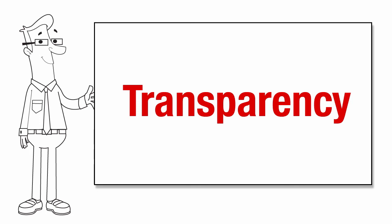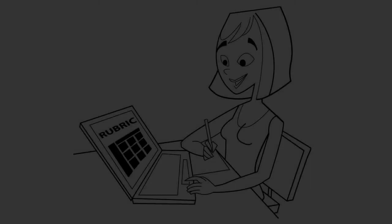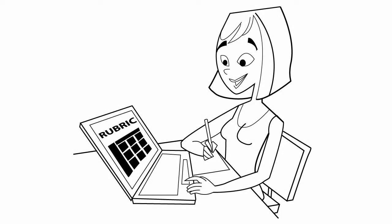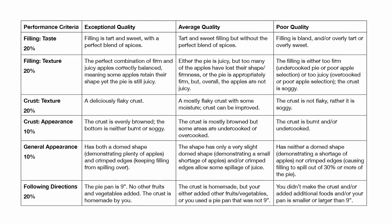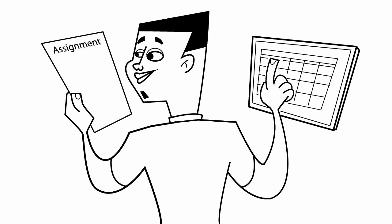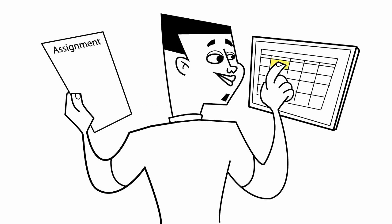Rubrics provide transparency to the student. The performance criteria outlines exactly what is being graded. There is no guesswork for the students. Students can review the individual description outlines and know exactly what is expected from each range scale. The highest expectations are clearly outlined. Students know exactly what is being assessed and the grade values assigned to each component prior to the assignment.